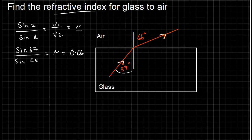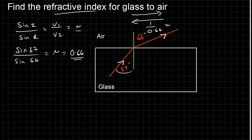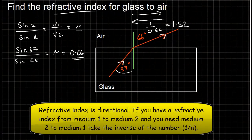This is the refractive index going from glass to air. If you want the other way — from air to glass — you can just take the inverse of 0.66, which is 1 divided by 0.66, and you should get about 1.48. There will be rounding errors since these numbers have many decimal places. So if you've been given a refractive index from glass to air but need it from air to glass, you can always take the inverse.